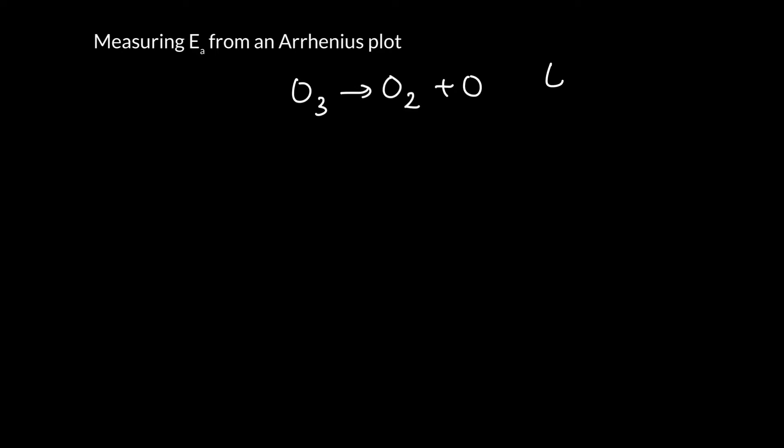And we might be interested in knowing what the activation energy is. So what is the barrier in the reaction, right? So we've got reactants, we've got products, and reactants don't immediately change into products until they have enough energy upon collision to make it over a transition state. And that minimum energy we call the activation energy.